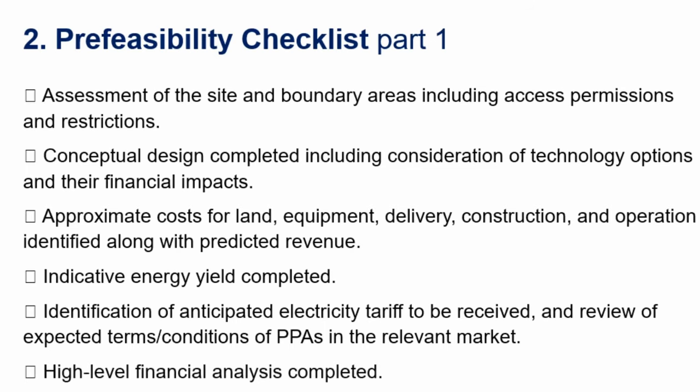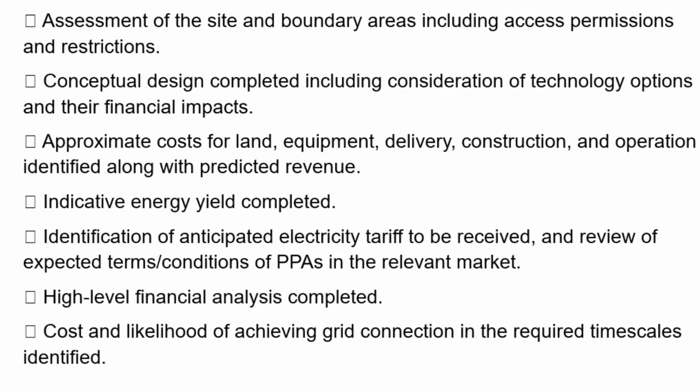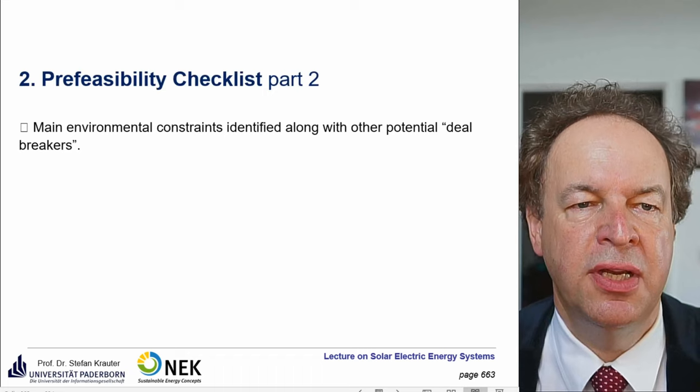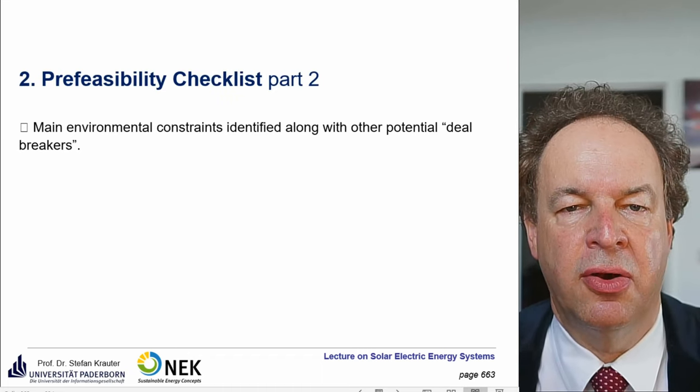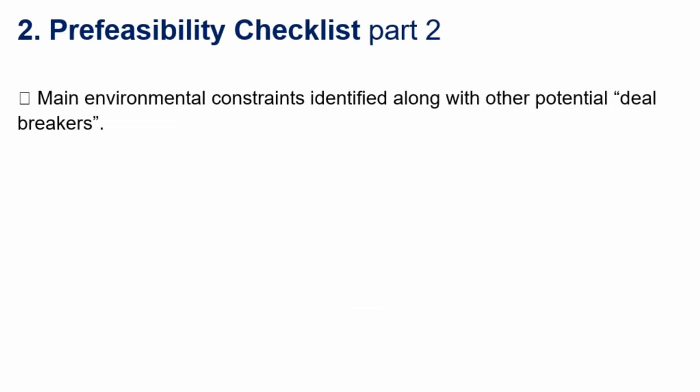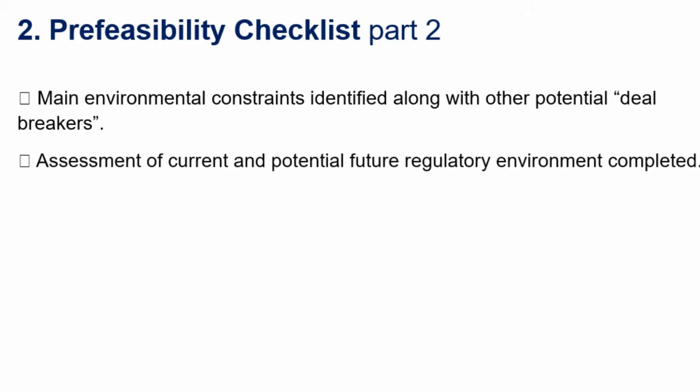Then you carry out a high-level financial analysis, and assess the cost and likelihood of achieving grid connection in the required timescales — this depends on experience with the utility. The main environmental constraints are identified along with potential deal-breakers — there could be a change of government, a change of utility ownership. Assessment of the current and potential future regulatory environment is completed — you have to make a future estimation of what will happen, because when you finish your project, the contract should still be valid.